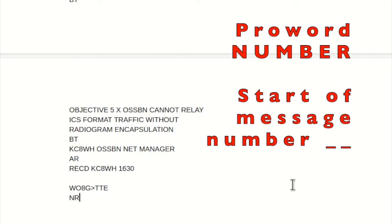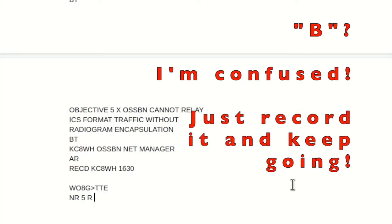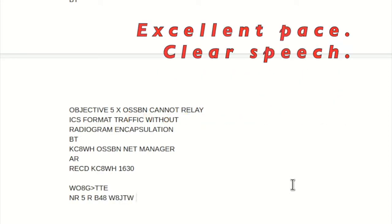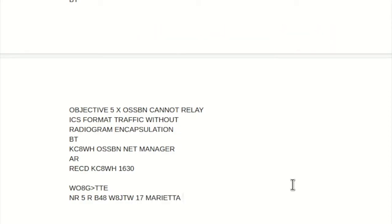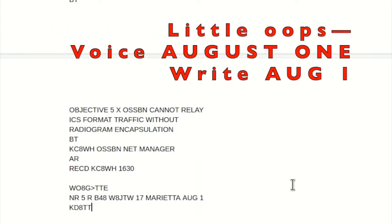Starting at number 5, Routine, B-4-8, Whiskey 8 Juliet Tango Whiskey, 1-7, Marietta, August 1st, Kilo Delta 8 Tango Tango Echo. Break.